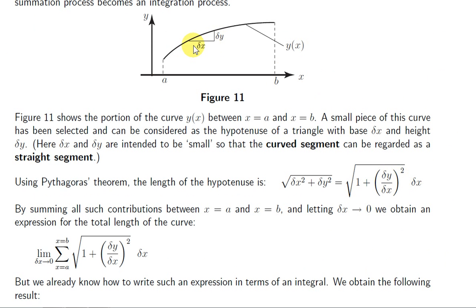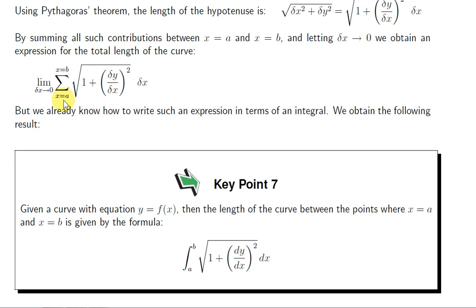We can do this for all little segments from x equals a to x equals b and sum them. Our approximation gets better and better as delta x becomes very small — delta y will also get smaller, and the hypotenuse gets closer to the actual curve length. To make the approximation exact, we take the limit as delta x tends toward zero. We've seen that when we take the limit of this sum we get an integral: delta x becomes dx, and the sigma sum becomes the integral from a to b. As delta x goes to zero, delta y goes to zero, so we replace delta y with dy.